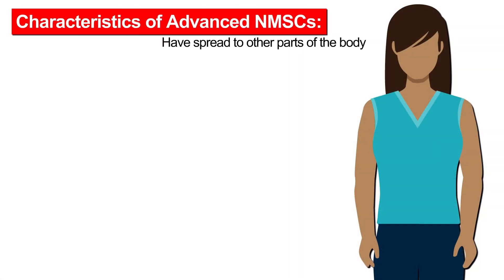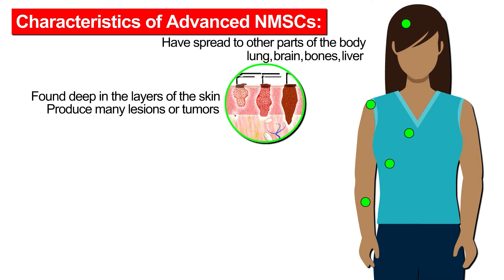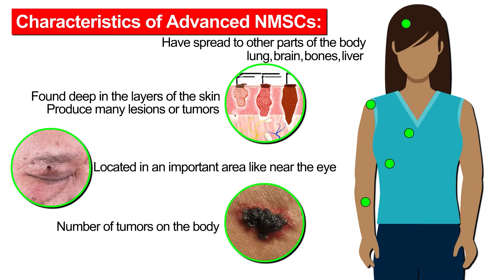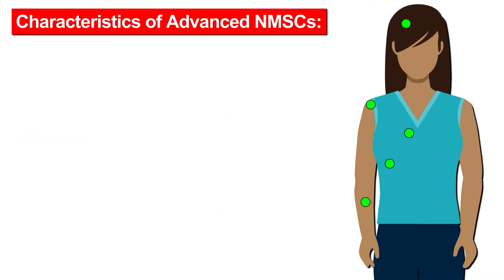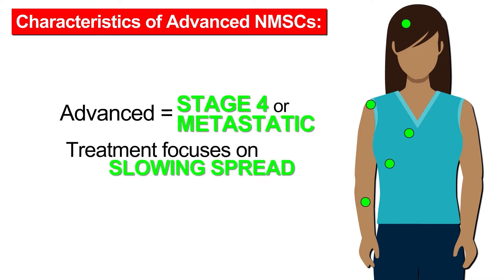Advanced usually means that the cancer has spread to another organ or part of the body — it might be the lung, brain, bones, liver, or elsewhere. Non-melanoma skin cancers may also be considered advanced due to the size or depth of the lesion or tumor, location of the cancer, or the number of tumors on the body. Advanced cancer is also called stage 4 or metastatic. Treatment focuses on slowing the spread or growth of the disease rather than curing the cancer.